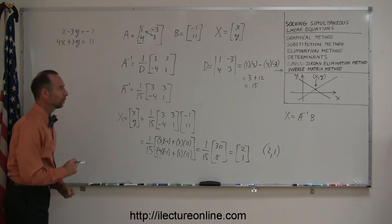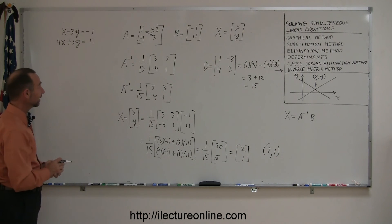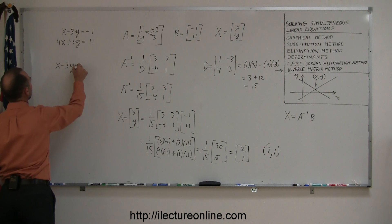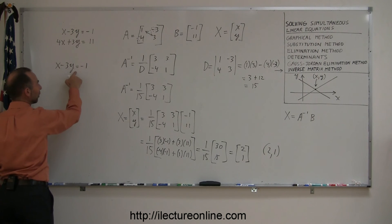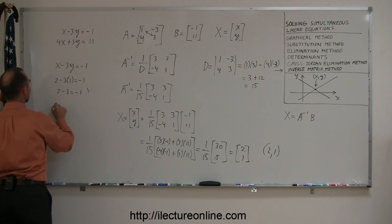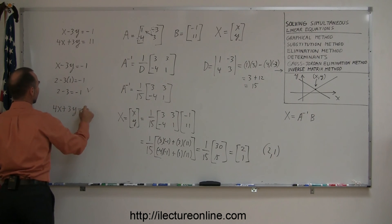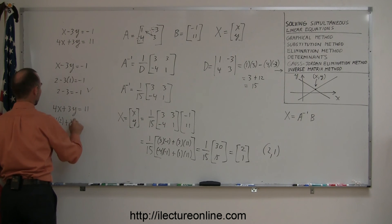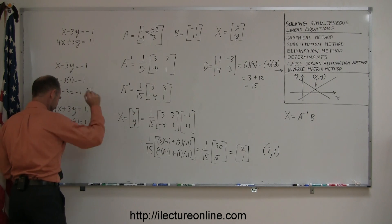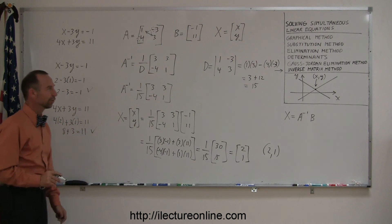That's the solution to the two equations — that's where they cross. Just to make sure we did it correctly, let's plug those two numbers back into x and y. If we take x minus 3y equals negative 1, and plug in 2 for x and 1 for y, we get 2 minus 3, which is indeed negative 1 — correct. For the second equation, 4x plus 3y equals 11: plug in 2 for x and 1 for y, so that's 4 times 2 plus 3 times 1, which is 8 plus 3, and that is indeed 11. So that's the correct solution to this problem.